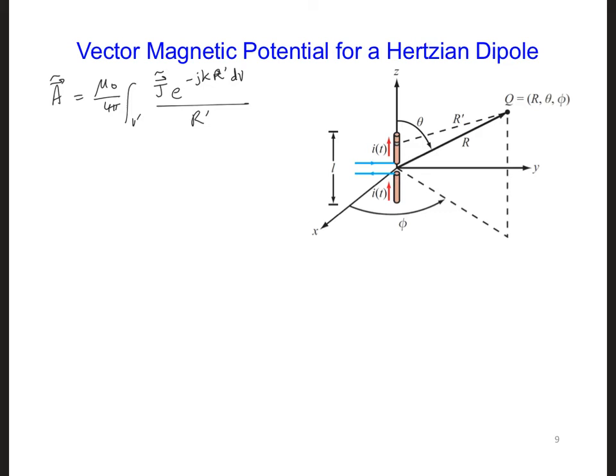For step one, we first calculate A from the current density j. We're going to use this equation given here. Let's substitute values into this expression.